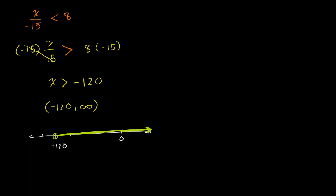If we graph it on a number line, let's say negative 120 is there, with 0 up here. This would be negative 121 and negative 119. We are not going to include negative 120, because we don't have an equal sign. But everything greater than negative 120 is in our solution set — all of these numbers shaded in green satisfy the inequality. You could try it out: does 0 work? 0 over negative 15 is 0, which is definitely less than 8. Hopefully you found that helpful. I'll see you in the next video.